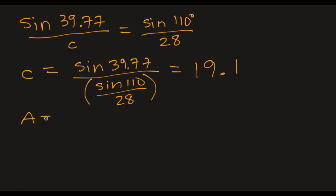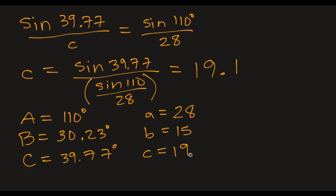So that's equal to 19.1. So what do we have? We have angle A was 110. Angle B, let's see, C was 39.77. Okay, if we think back, angle B was 30.23 degrees. Little a was 28. That was given. B was 15. That was given. And c is 19.1. Does this seem reasonable? Well, these add up to 180, so that's good. And 19 is in the realm of 15 and 28. I think it's something like 1,200 or something. So that seems reasonable. So there's my one unique solution in this case.